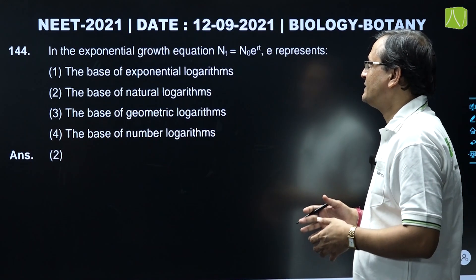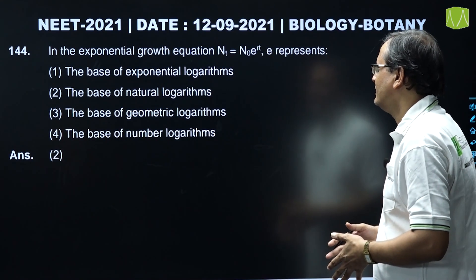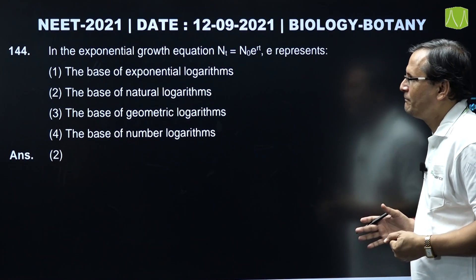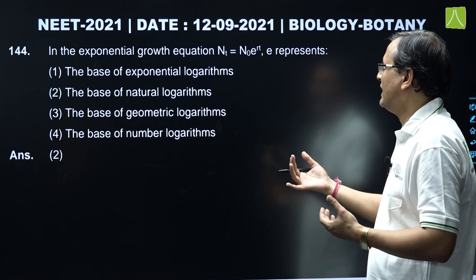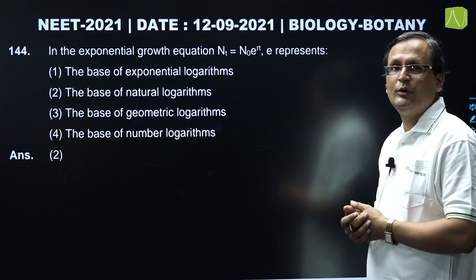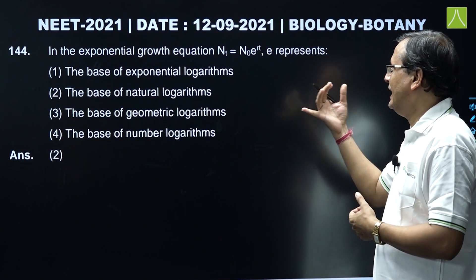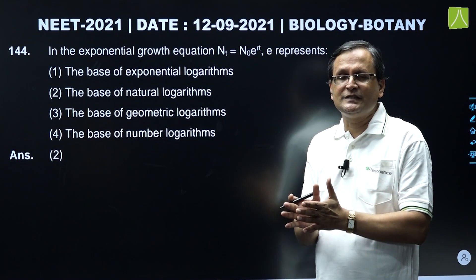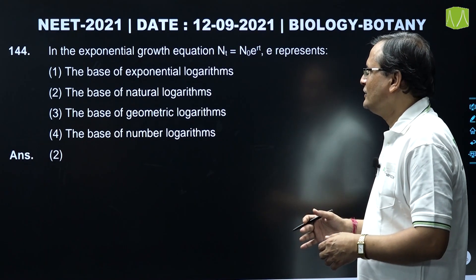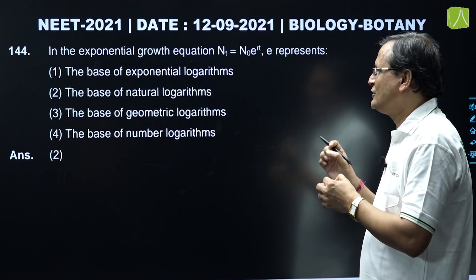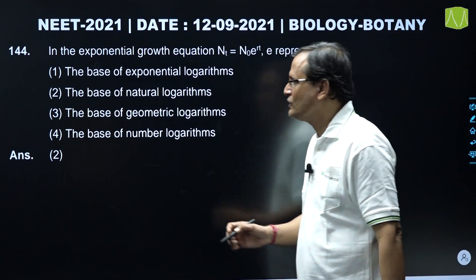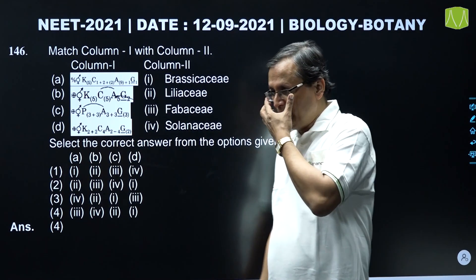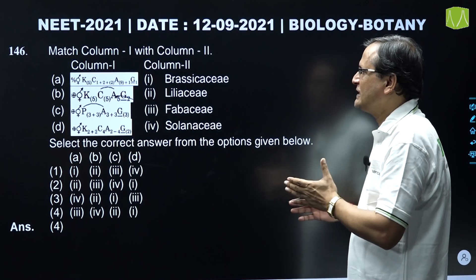Question 144: In the exponential growth equation Nt = N0 × e^(rt), what does 'e' represent? N0 is the initial population size, Nt is the population size at time t, r is the intrinsic rate of natural increase, and t is time. So 'e' represents the base of natural logarithms. Therefore, the second option is the correct answer.